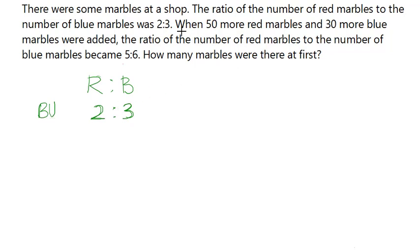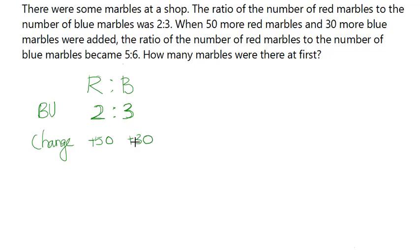Then, when 50 more red marbles and 30 more blue marbles were added, that's the change here. Both the red marbles and the blue marbles are changing — red is changing by plus 50 and blue is plus 30. After adding this, the ratio of red marbles to blue marbles became 5 is to 6. I'm going to call this the 'after units,' 5 is to 6.